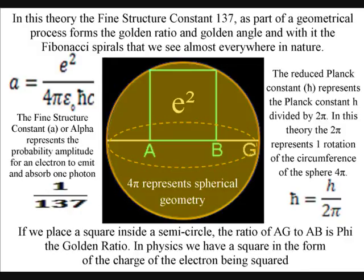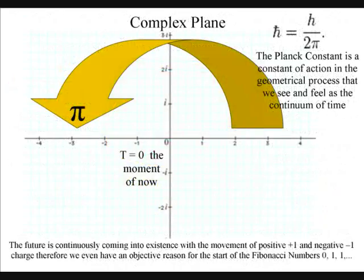Therefore we have a square of charge as a constant within this geometrical process. We also have the Planck constant linked to 2pi representing one rotation of the sphere.